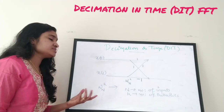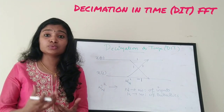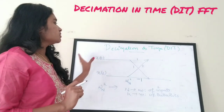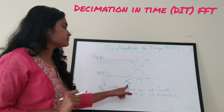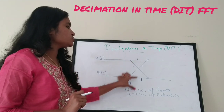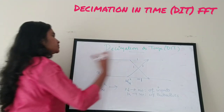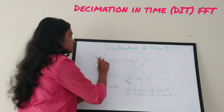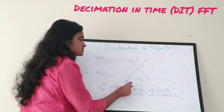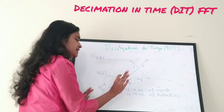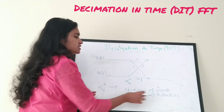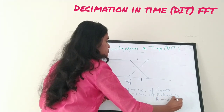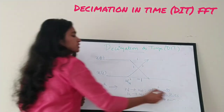If you are going to face exams, you don't have to understand the theory or proof of decimation in time — you can directly jump into the problems. So there is x of 0, x of 1, a twiddle factor, four branches, and branch weights for each branch. N is the number of inputs — here there are two inputs, so N equals 2. K is the number of butterflies, and K starts from 0.